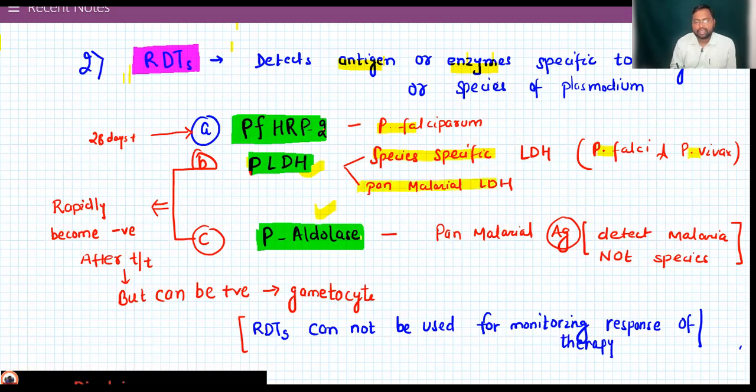The plasmodium histidine-rich protein is also pan-malarial antigen, so it detects malaria but not the species. These are the two tests. If the smear is negative, these two tests can be positive.